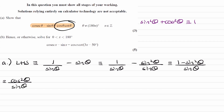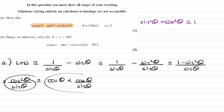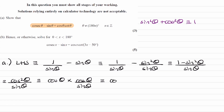So looking at what we have over here, we have cos times cot. Cot is cos over sine. So we can rewrite this as cos theta multiplied by cos theta over sine theta. These two things are the same, and what we have here is just cot theta. So this then becomes cos theta cot theta, which is our right-hand side.